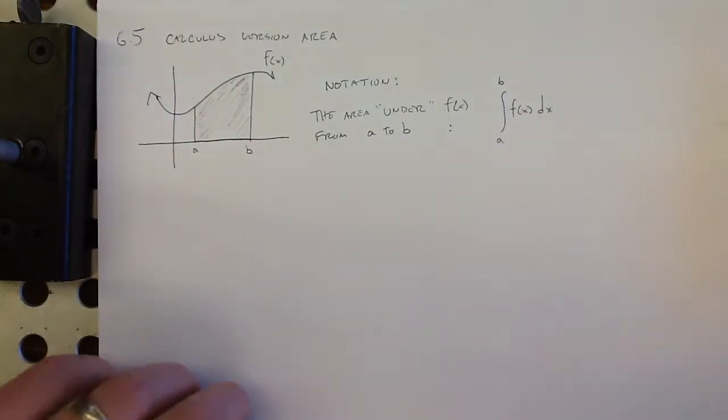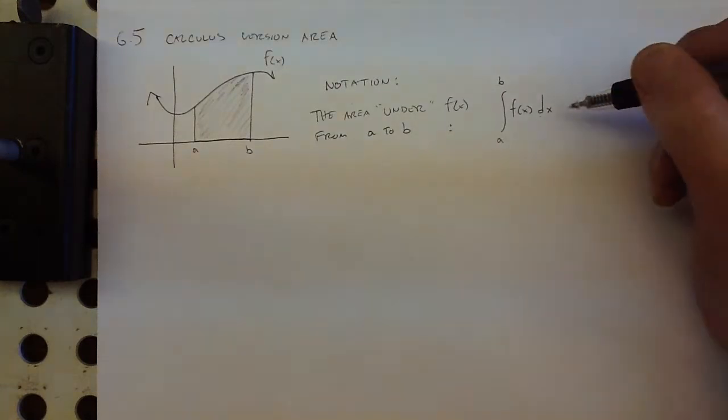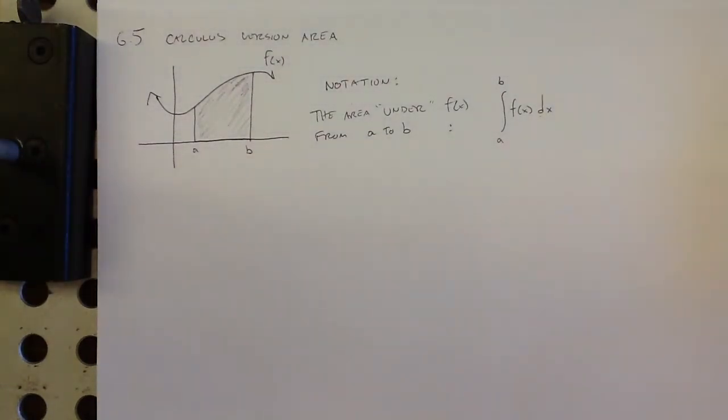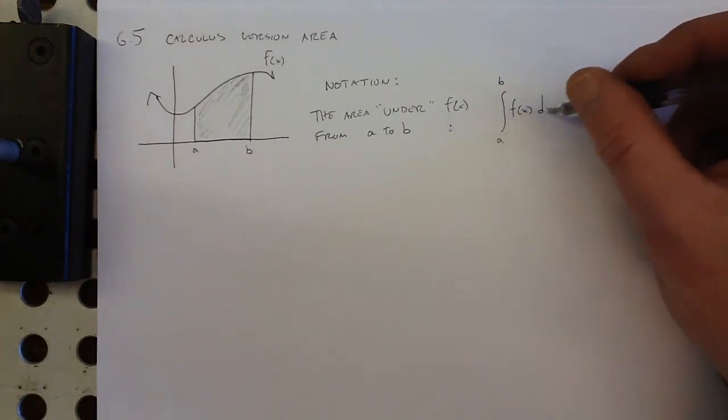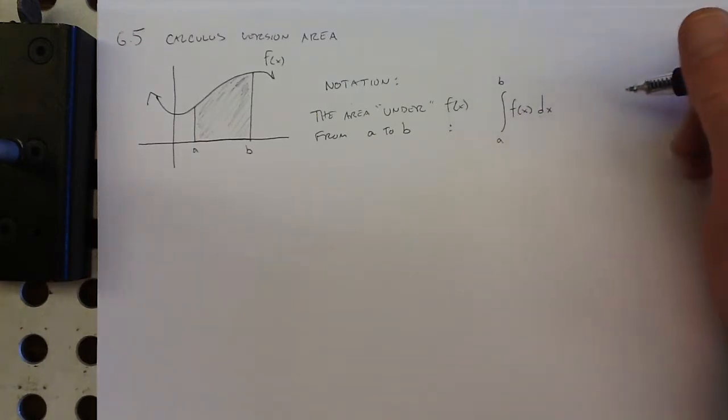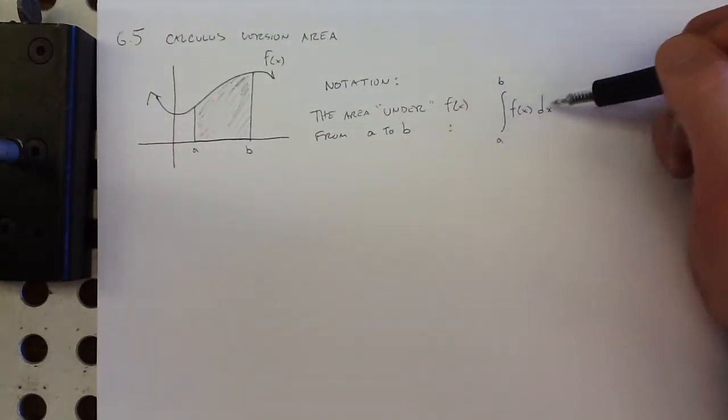Why this dx is here, I'm not going to explain today. That will become clear later. It's a little piece of the notation, very important that it is there. In the same way that when we write dy dx, we know that the dx on the bottom is telling us what variable we're interested in, this is just telling us that x is the variable that we're interested in. So this is our notation: the area under f of x from a to b.